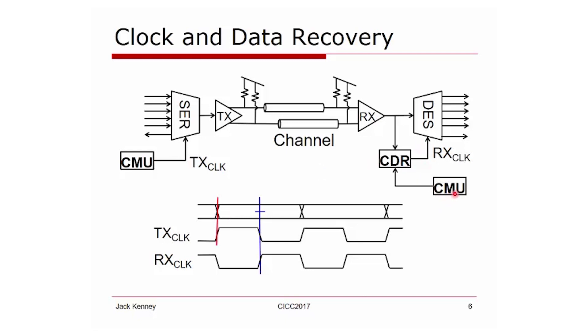In a CDR, on the receive chip, you have a clock multiplier unit. You have a CDR, which is basically a delay lock loop with a phase detector integrator and that phase shifter from the previous slide. The CDR will figure out the timing to position the receive clock in the center of the data eye.